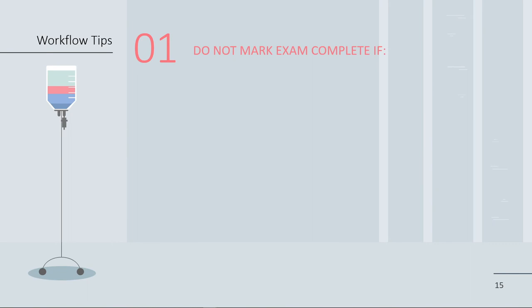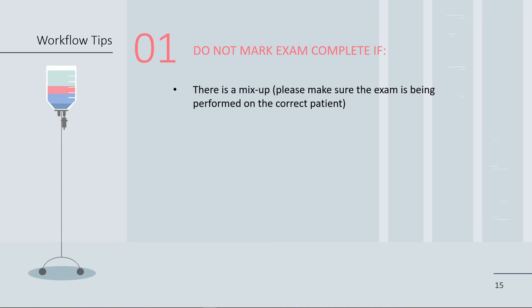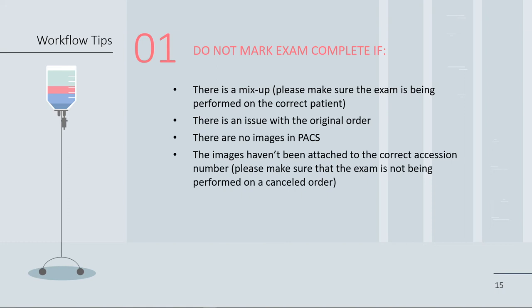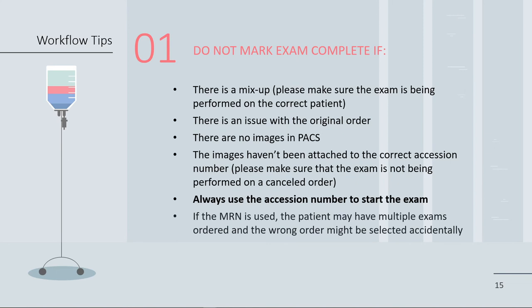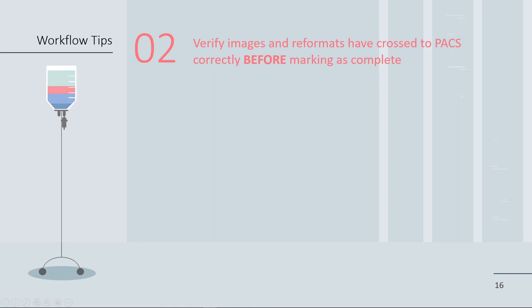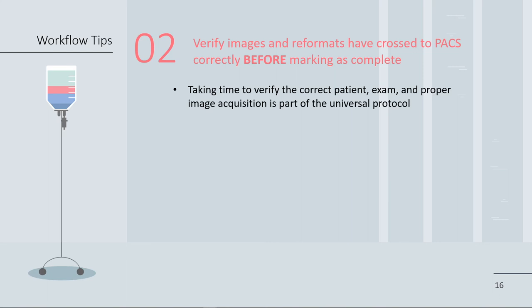Here are some helpful workflow tips. Do not mark the exam as complete if any of the following issues occur: there is a mix-up — please make sure the exam is being performed on the correct patient; there is an issue with the original order; there are no images in PACS; or the images haven't been attached to the correct accession number. In this case, please make sure that the exam is not being performed on a cancelled order. Always use the accession number to start the exam. If the MRN is used, the patient may have multiple exams ordered and the wrong order might be selected accidentally. Verify that the images and reformats have crossed to PACS correctly before marking the exam as complete.